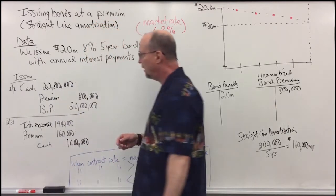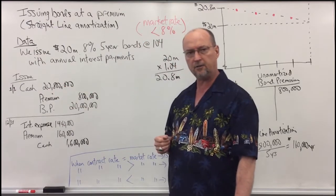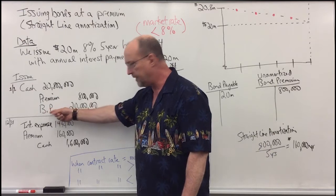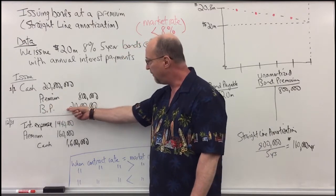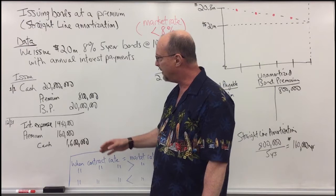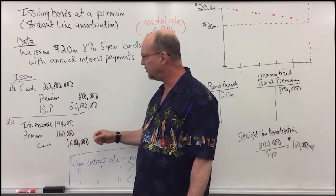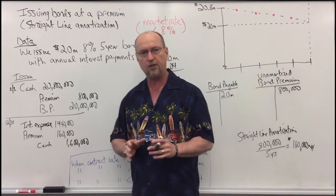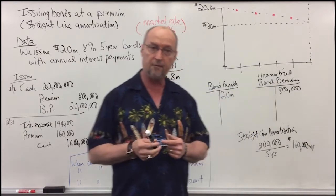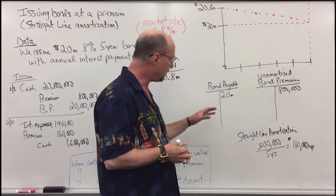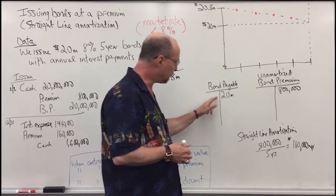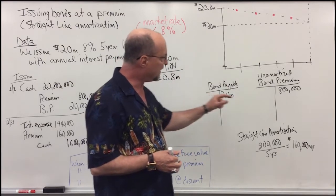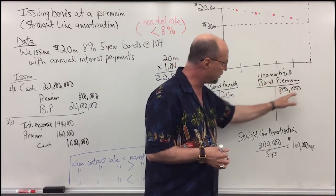On the date of issuance, I'm going to debit cash for $20,800,000. I always credit bonds payable — abbreviated BP — at face value $20 million, and I'm going to credit the unamortized bond premium for $800,000. Notice in the T-accounts: bonds payable is a liability, so we credit it at face value $20 million, and we credit the unamortized bond premium for $800,000.